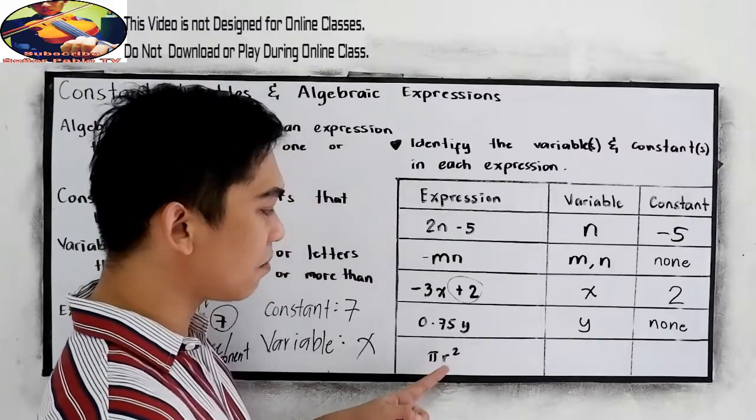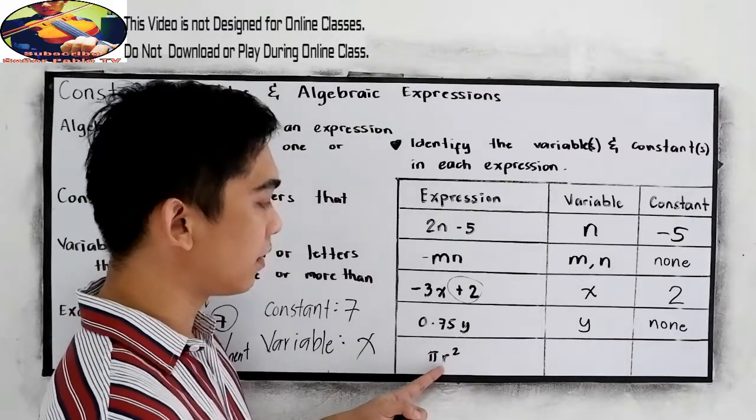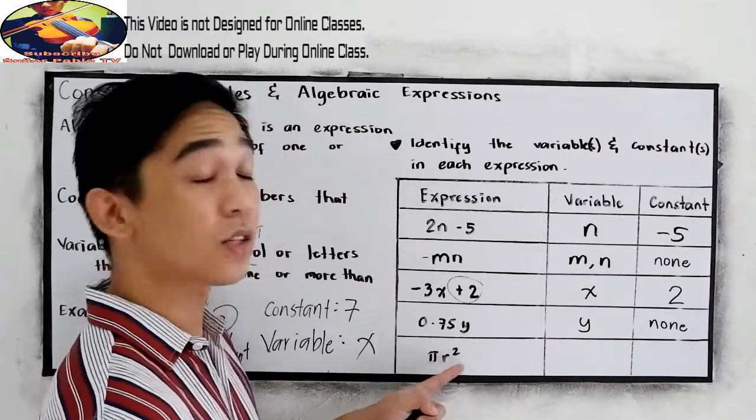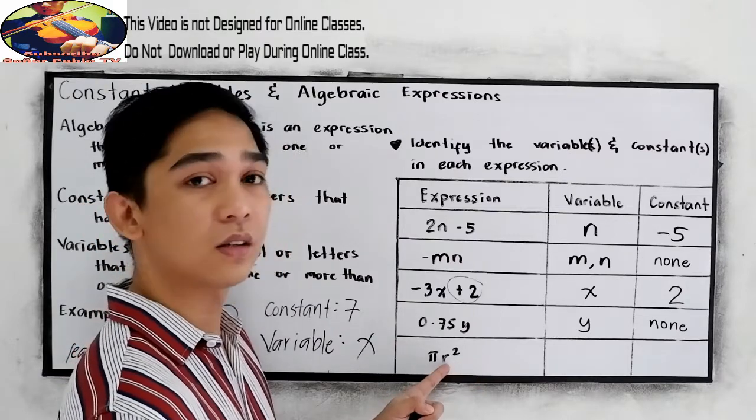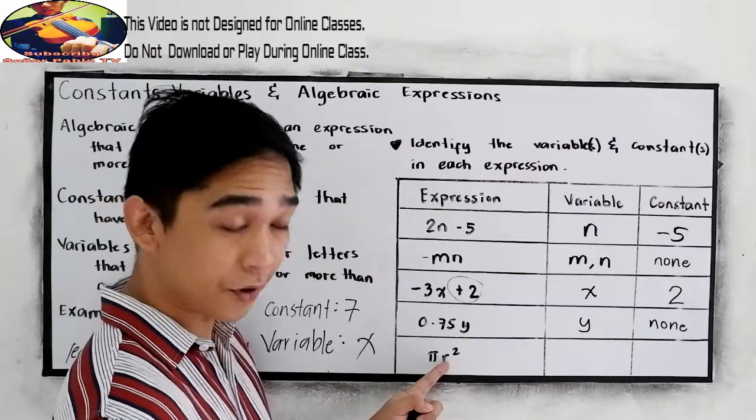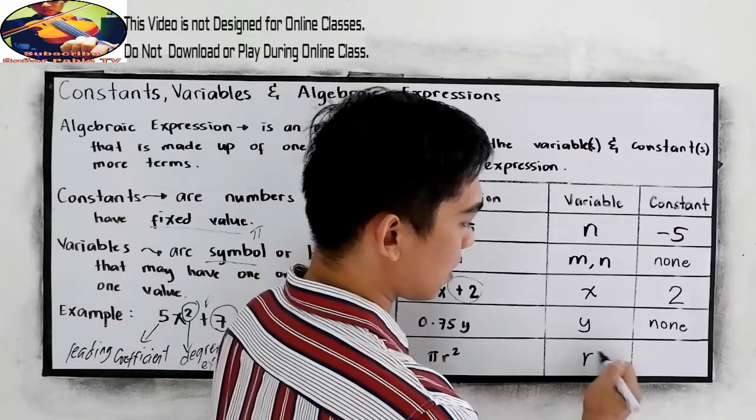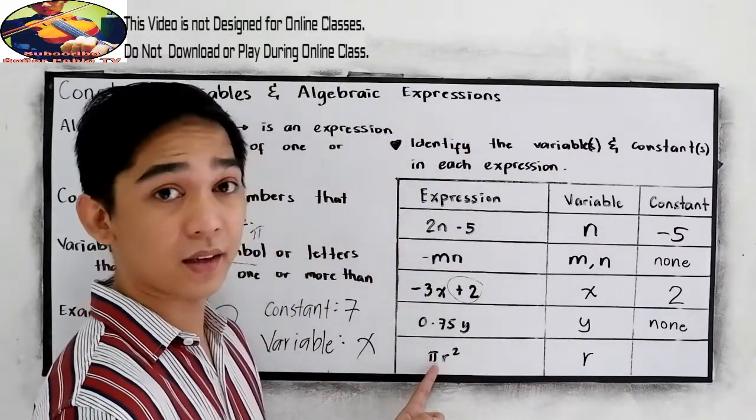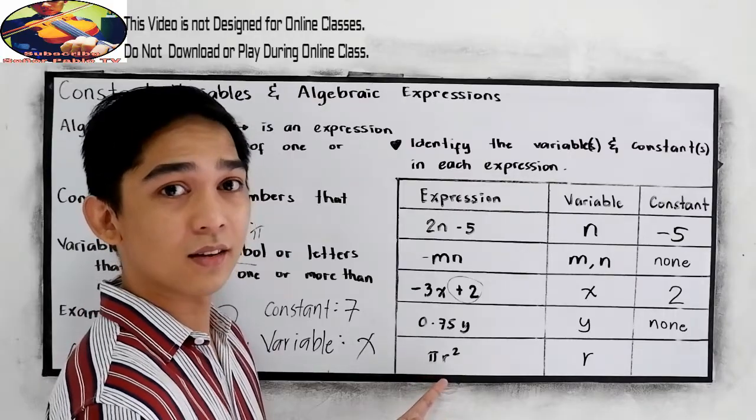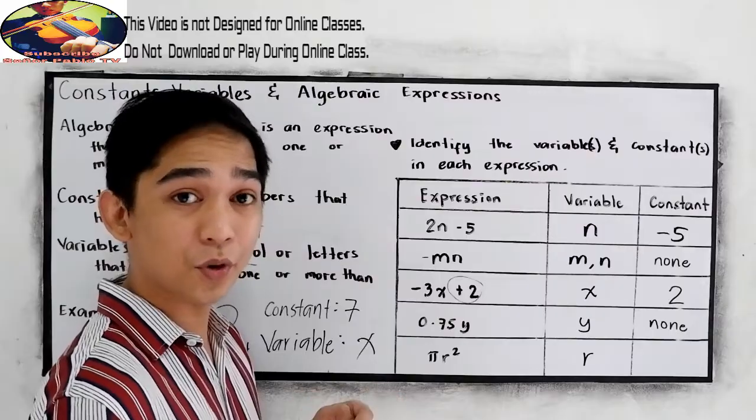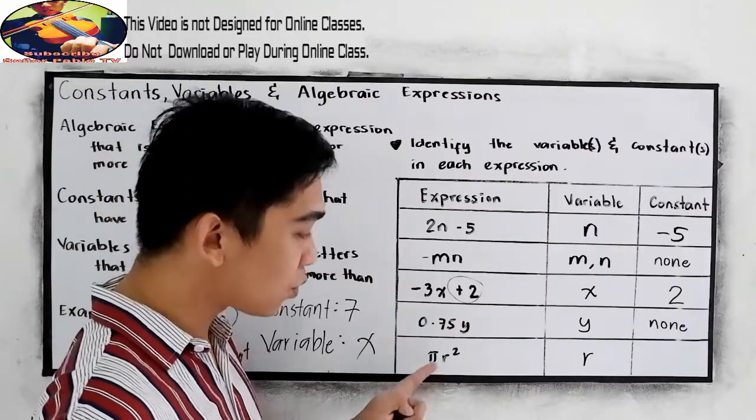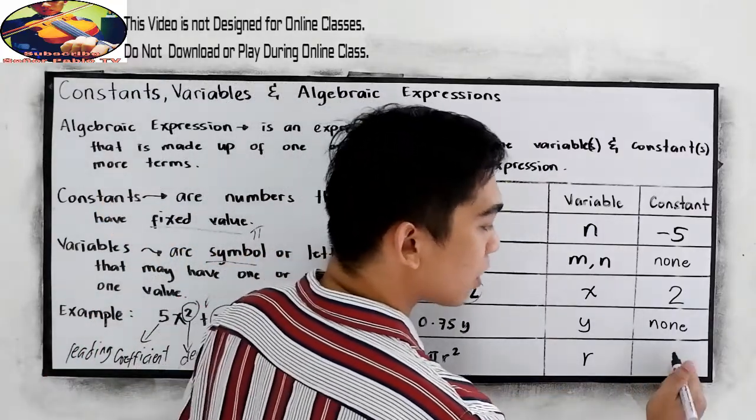How about in number 5, pi r squared. So we have r, which will be our variable. And notice that we have pi. Pi has a fixed value. It is 3.1415. So we are going to write pi in our constant.